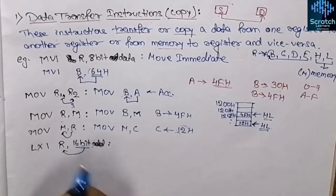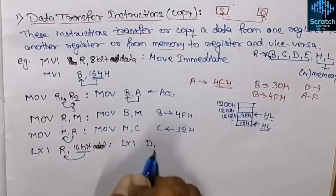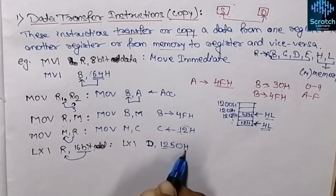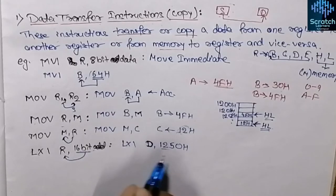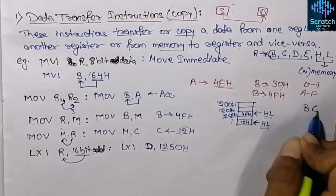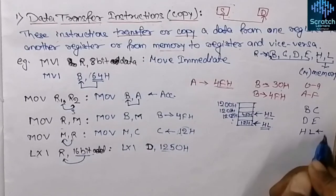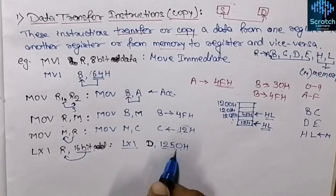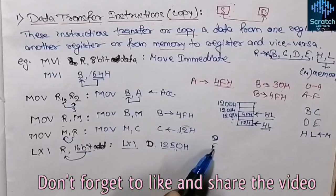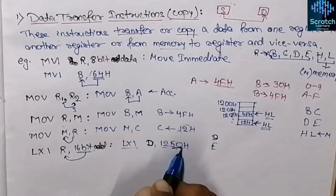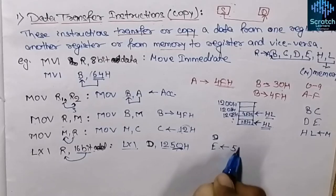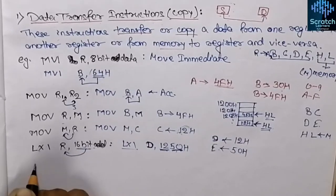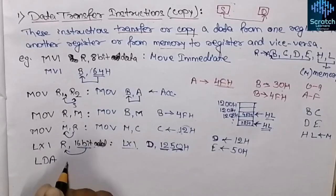The next instruction is LXI r, 16-bit address or data. This loads a 16-bit data value into a register pair. For example, LXI D, 1250H — since each register holds only 8 bits, the lower two significant bytes are stored in register E and the higher significant bytes are stored in register D.